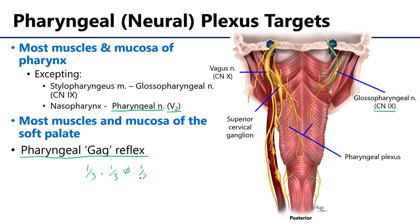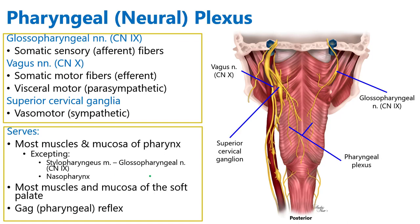That's something to consider when performing an examination of the oral cavity — be careful so as not to trigger the gag reflex in two-thirds of the population, and especially in the one-third who may be hyper-stimulated. We've discussed the pharyngeal neural plexus, its various inputs and targets. This is your summary slide. Thank you very much.